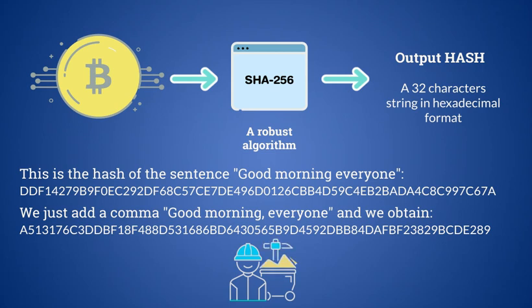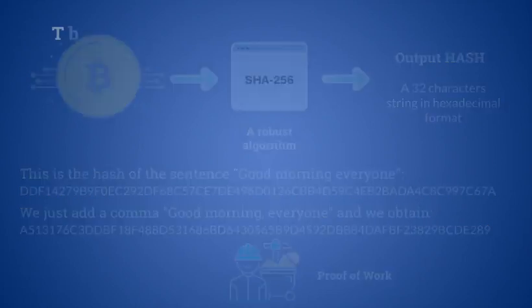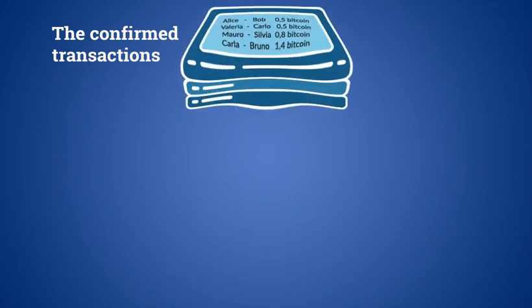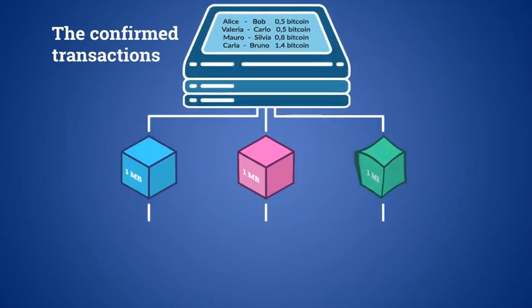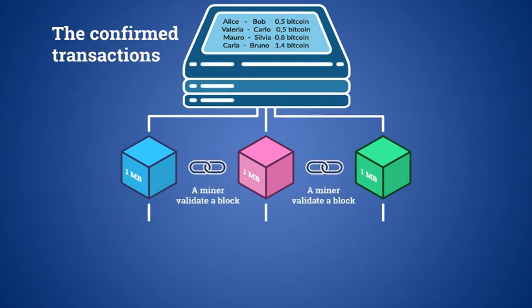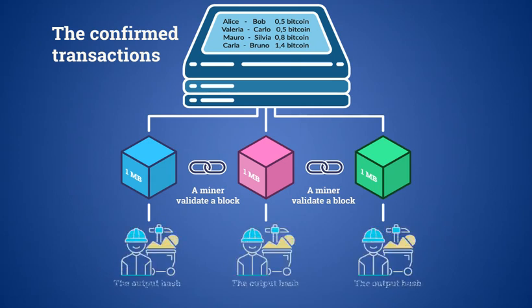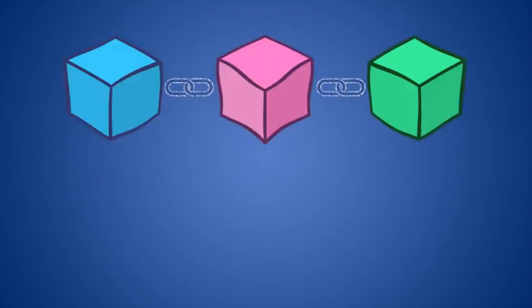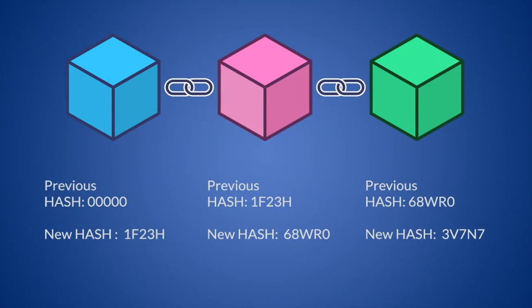This topic will be further expanded when we discuss proof of work and mining activities. Confirmed transactions are grouped and inserted in blocks, which are one megabyte in size and contain between two thousand and three thousand units. When a miner validates a block, it means they solve a mathematical problem through a very long series of calculations. The result is a cryptographic hash with very specific characteristics, available both at the end of the newly validated block and at the beginning of the next one, so that the two blocks have an element that keeps them chained and in chronological order.